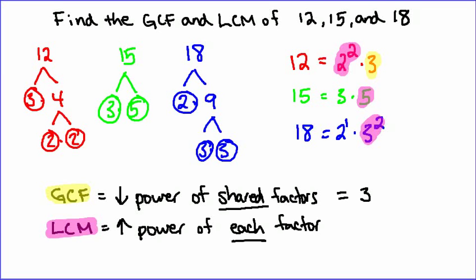The LCM is the highest power of each factor, so putting it all together: it is 2 squared times 3 squared times 5. Expanding that out: 4 times 9 times 5. 4 times 5 is 20, and 20 times 9 is 180. So the LCM of 12, 15, and 18 is 180, and the GCF of 12, 15, and 18 is 3.